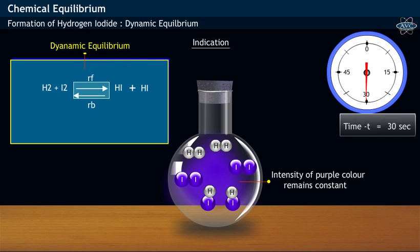At dynamic equilibrium, the rate of forward reaction, RF, equals the rate of backward reaction, RB.